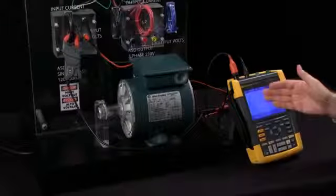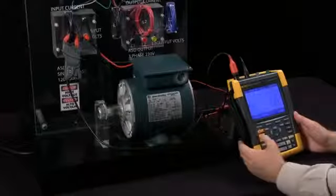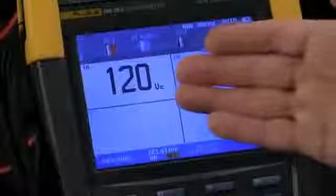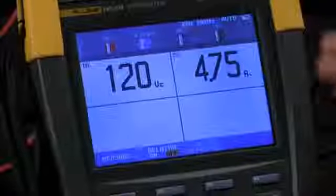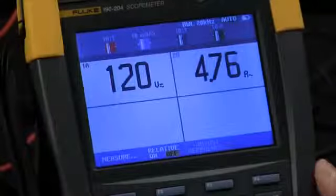In your scope mode we're looking at the input voltage and current to the drive. I can also shift into meter mode and now we're just displaying this as a numerical value. So there are my 120 volts on the input of the drive and I'm also drawing 4.75 amps.